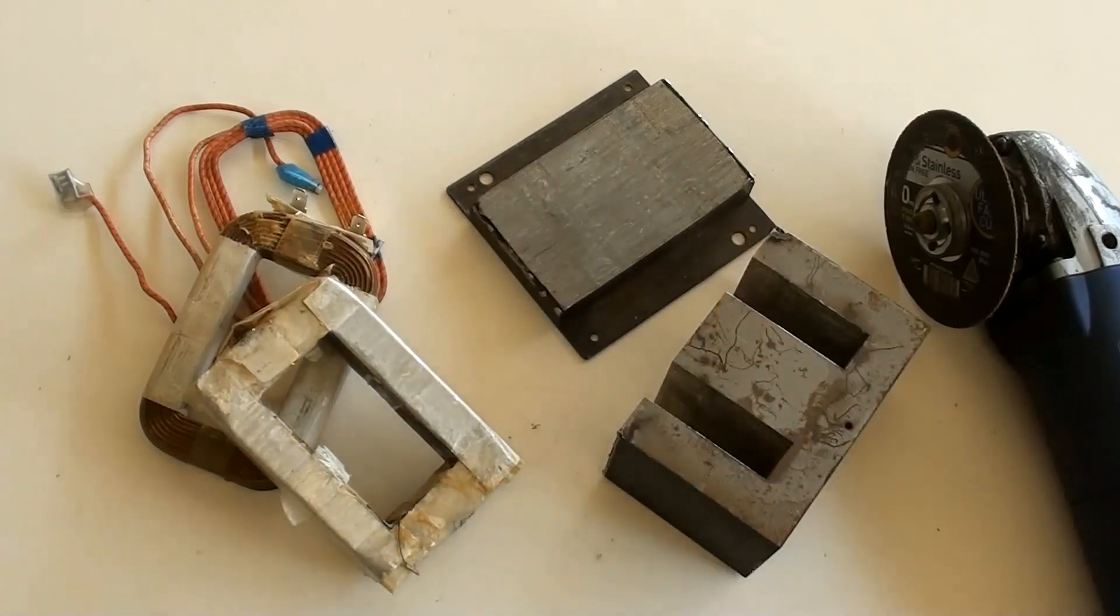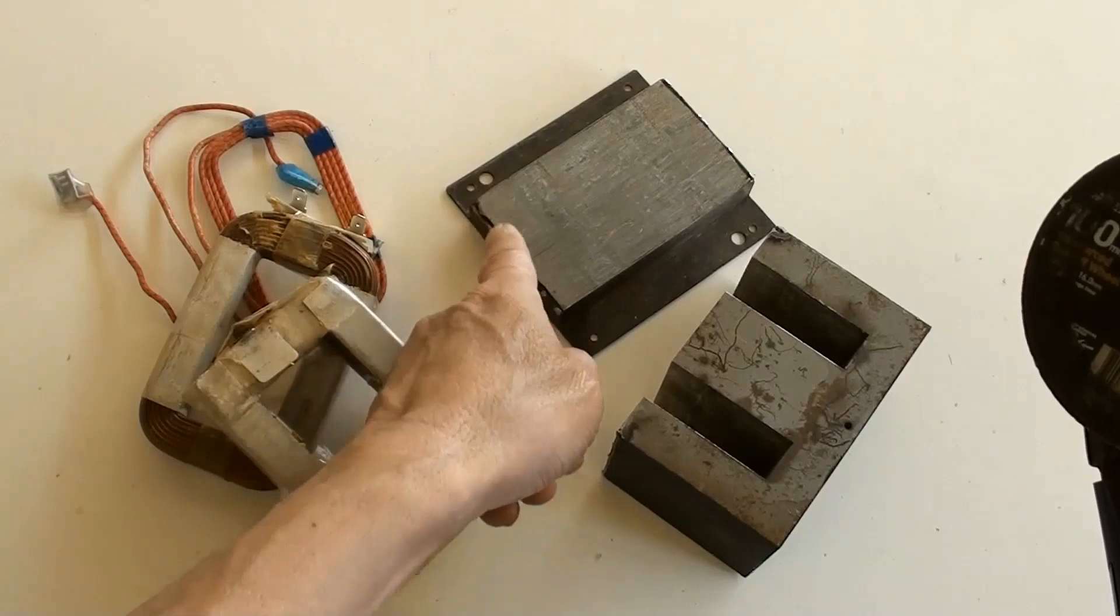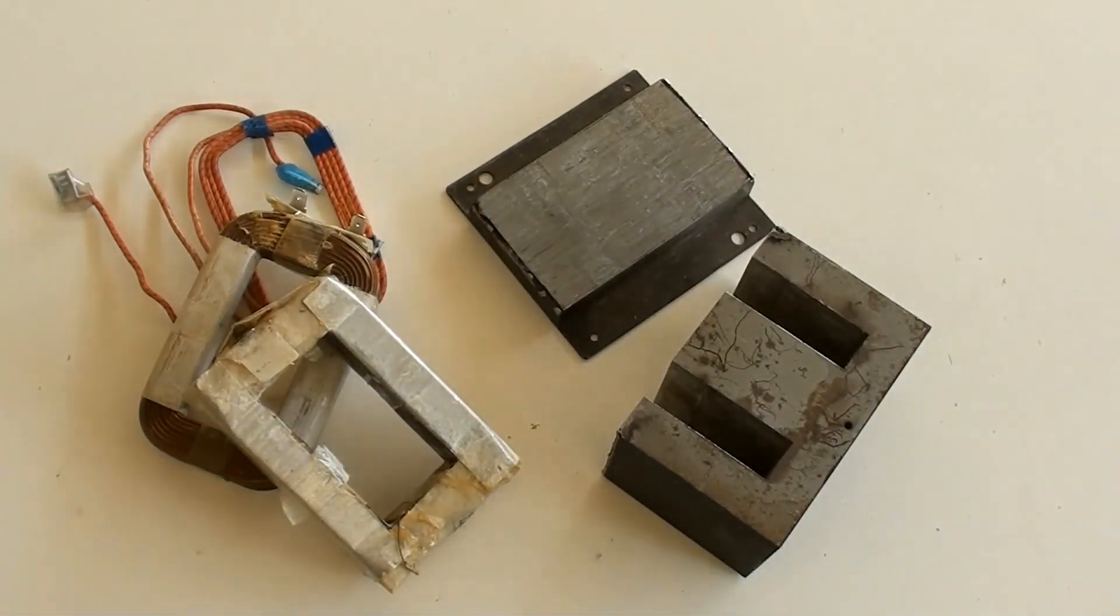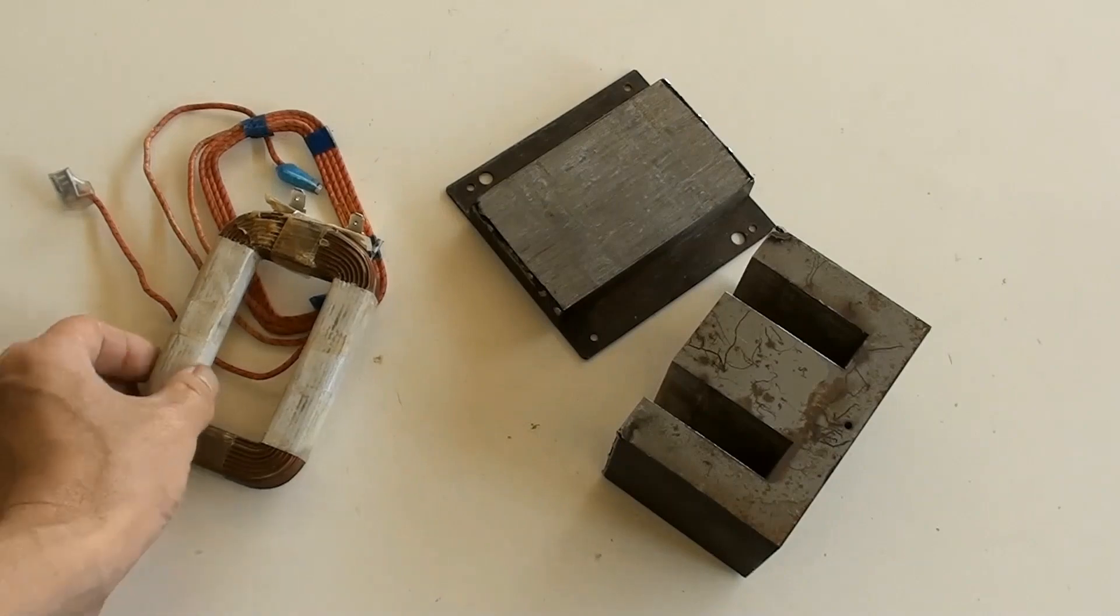These are the parts from a microwave oven transformer dismantled by using an angle grinder to cut the sides of the core. No need for these original coils, however DIY coils will be made.